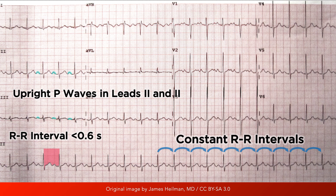To quickly recap: with sinus tachycardia, an upright P wave of constant morphology precedes every QRS complex, with a regular heart rate faster than 100 beats per minute.